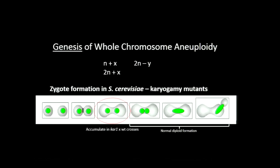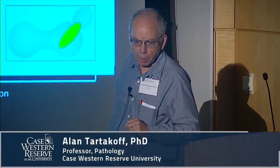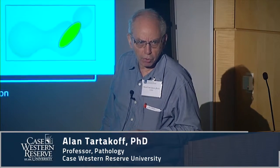There was a focus especially on these stages, first by the Fink laboratory, then by others, who developed what today are known as the karyogamy, or KAR mutants. The important one for my discussion today is KAR1. It turns out this KAR1 mutation, if it's present in one cell and you cross it with a wild-type cell, as a first approximation, this is the end of the road, and then the cells go on budding.